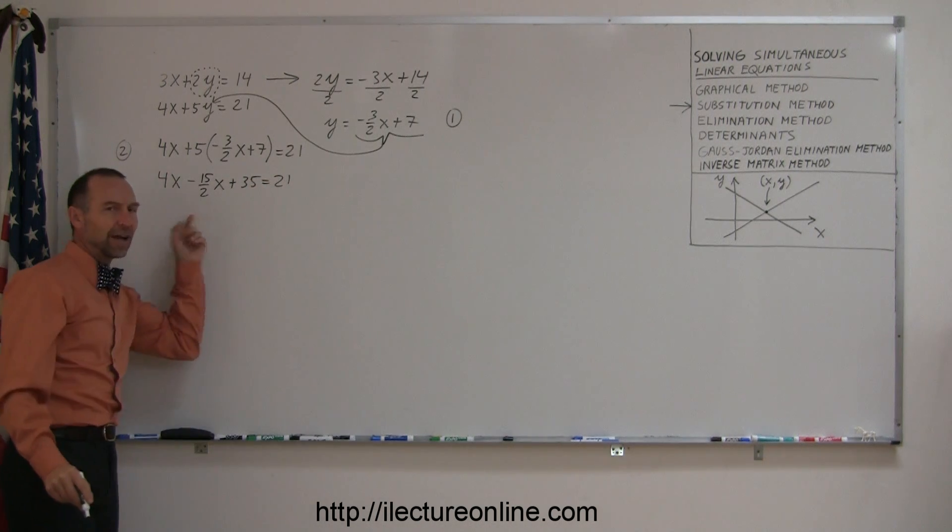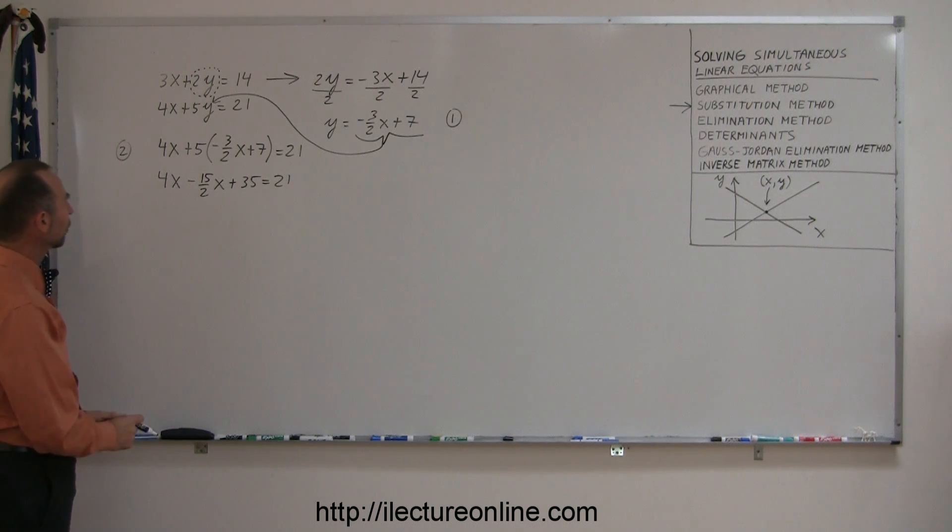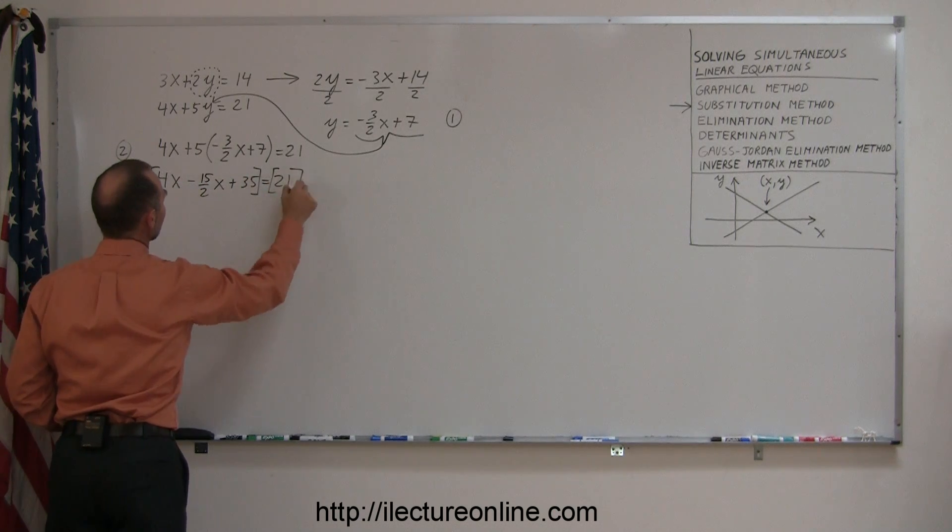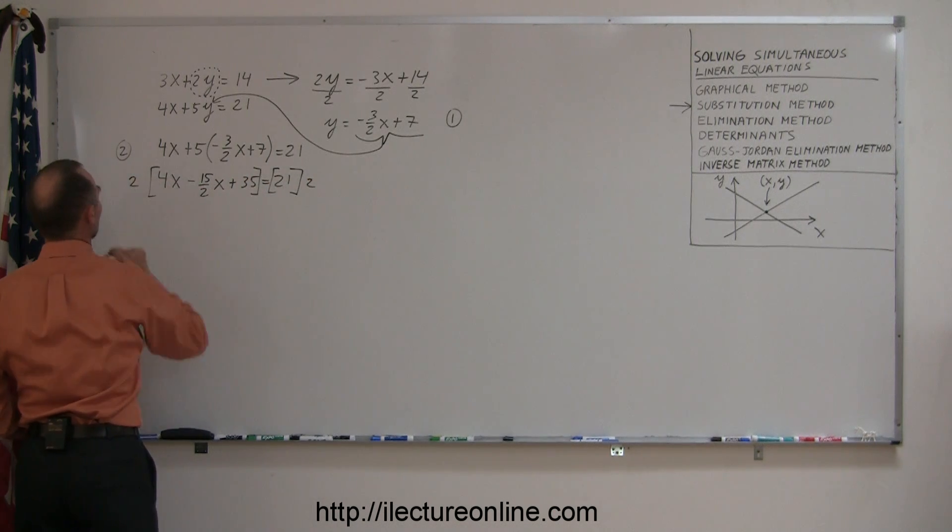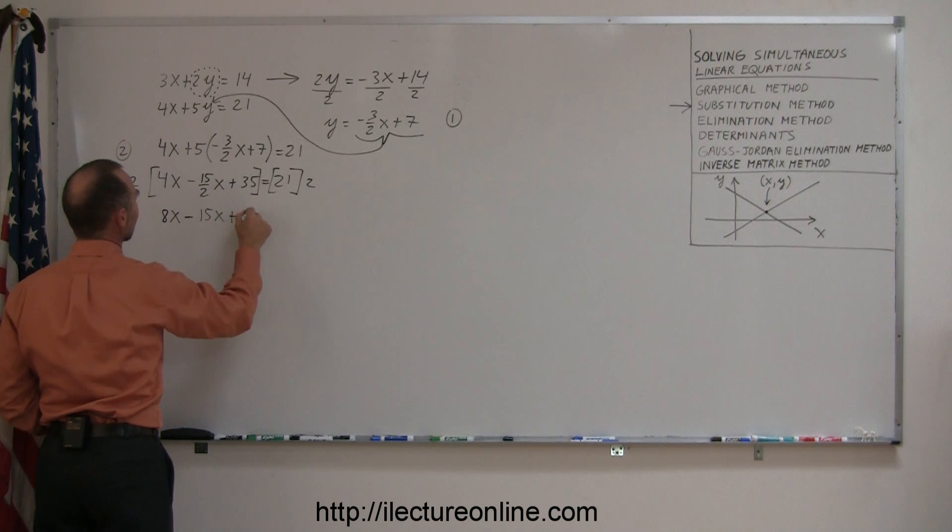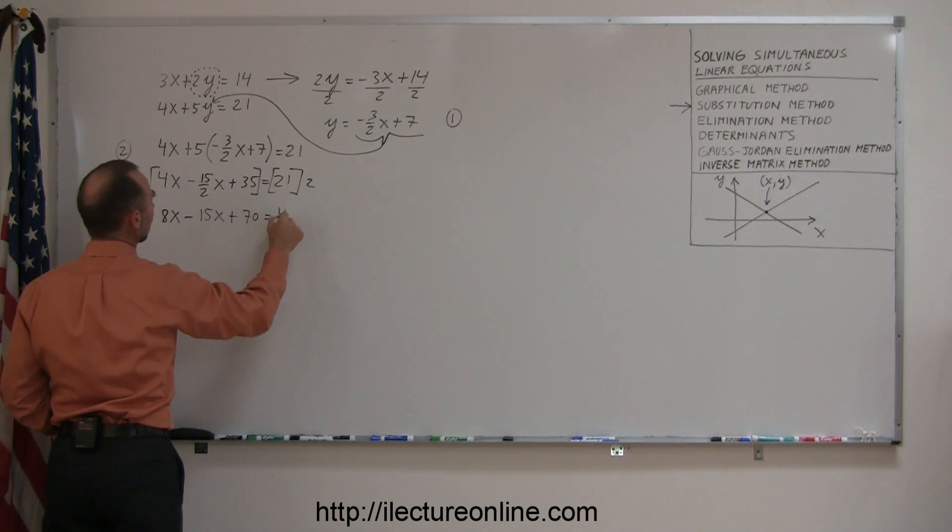Okay, I still have a fraction in there, and I don't like fractions, so I'm going to multiply both sides of the equation by 2 to get rid of that fraction. So multiply the left side by 2, multiply the right side by 2. So this becomes 8x minus, the 2 cancels out, so we get 15x plus 2 times 35 is 70, equals 42.